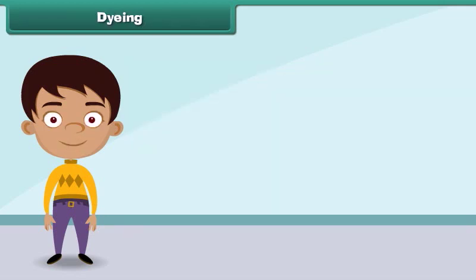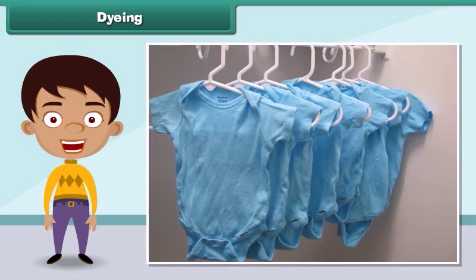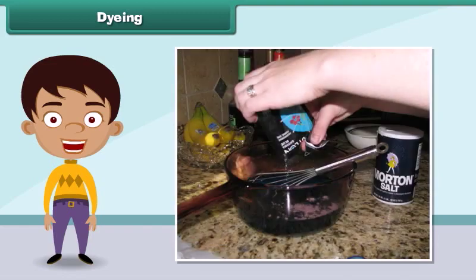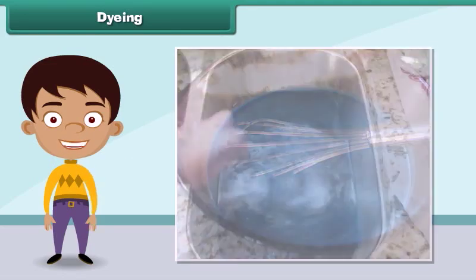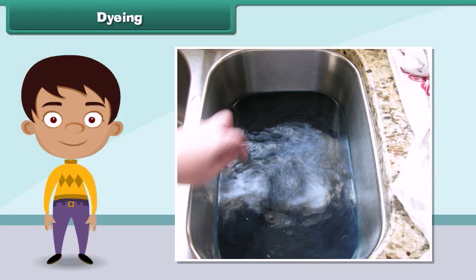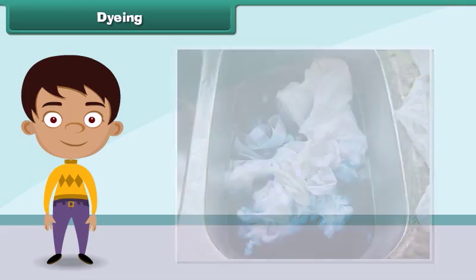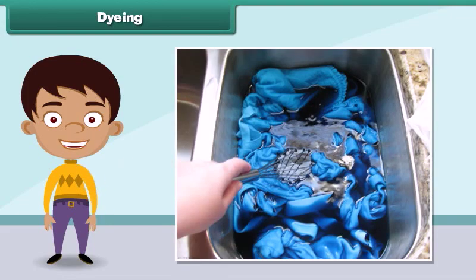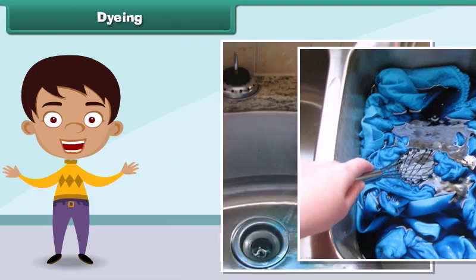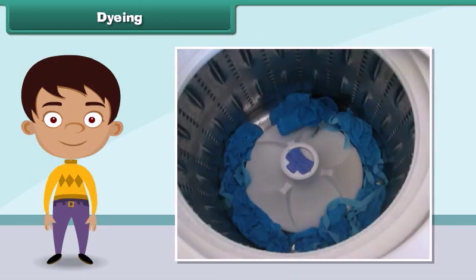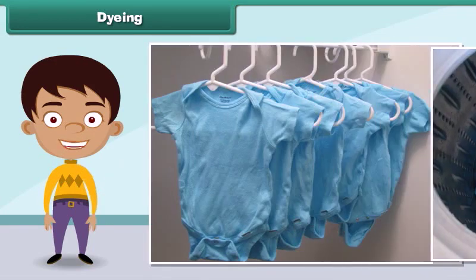Dyeing means giving a new color to the fabric. To dye a fabric, first a solution of dye and salt in warm water is prepared. Next, the fabric is dipped in the solution. Then the fabric is removed from the solution after an hour and washed. Finally, the fabric is dried.